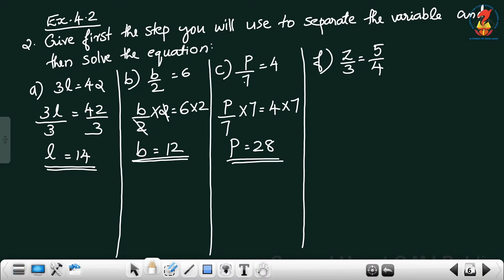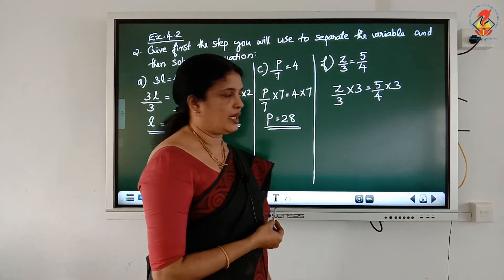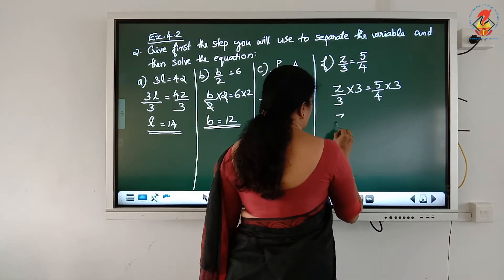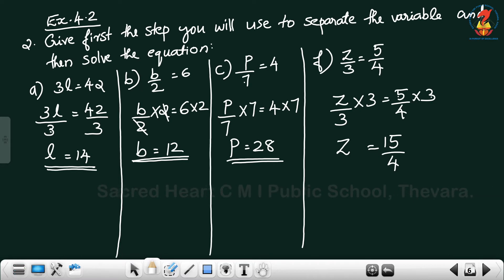Next: Z by 3 = 5 by 4. Z divided by 3 — to eliminate this divided by 3, multiply both sides by 3. The left-hand side divided by 3, multiplied by 3, eliminates, and the left-hand side becomes Z. That means the variable is separated. Z = 5/4 multiplied by 3, giving Z = 15/4.